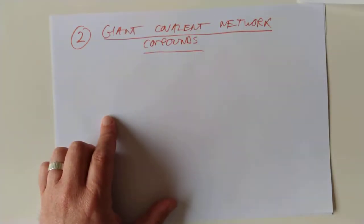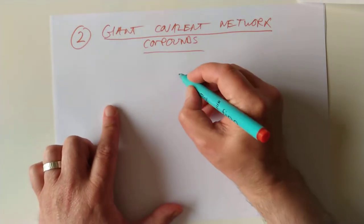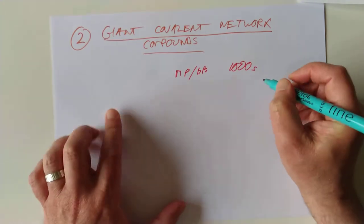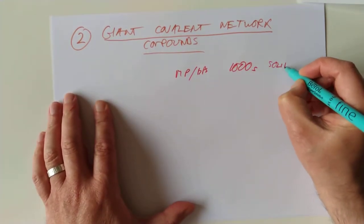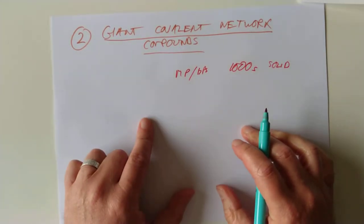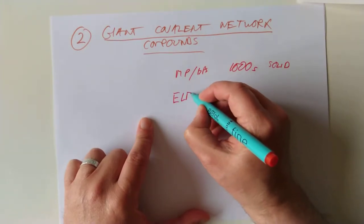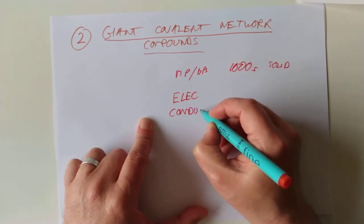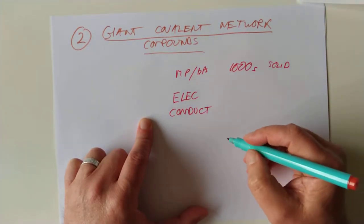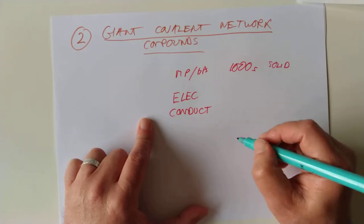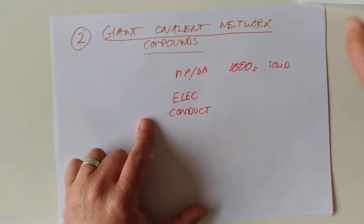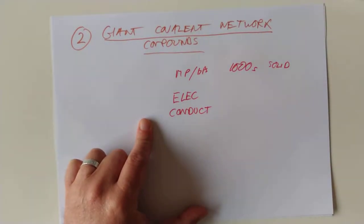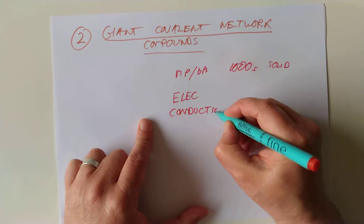That's why sand and other giant covalent networks are so physically strong. They have sky-high melting points. So melting and boiling points in the thousands of degrees. They're most definitely solids at room temperature. Their electrical conductivity, because they are covalent, they never conduct. I don't care what you do to them. Leave them as a solid, try and dissolve them, it's not going to happen. Melt them, yeah that can be done. Doesn't care. There are no charges in this network. There's no positives, no negatives, so therefore it's not going to conduct electricity. So electrical conduction, never.